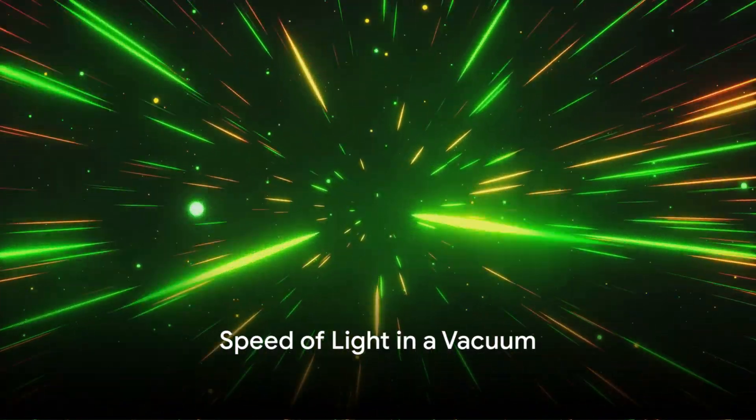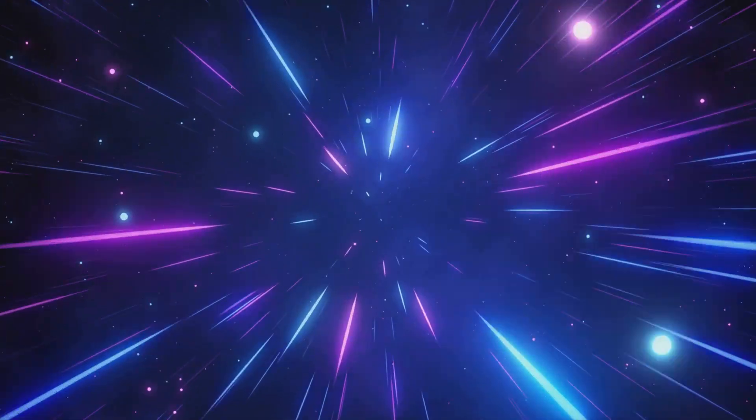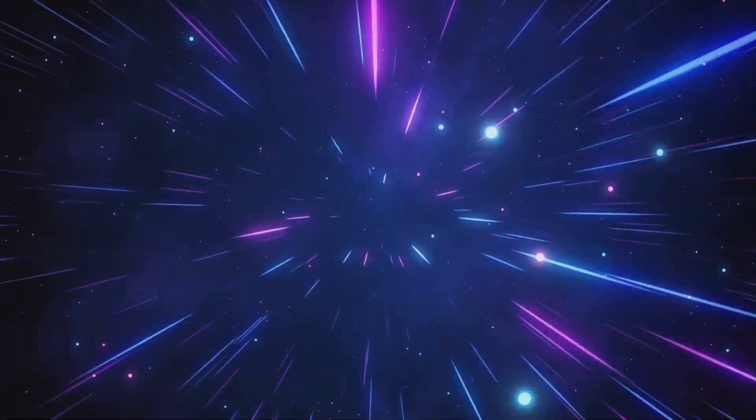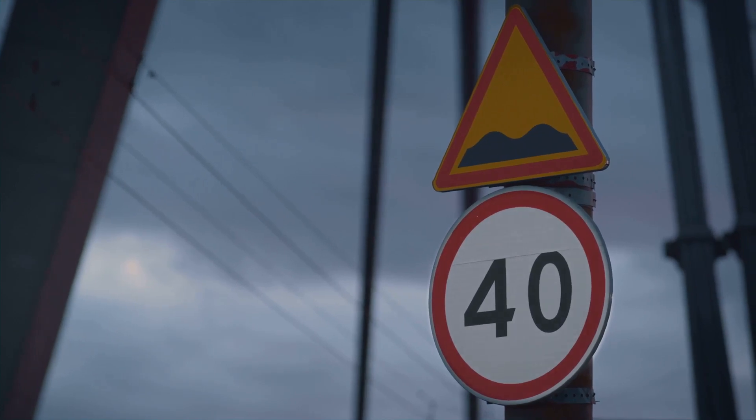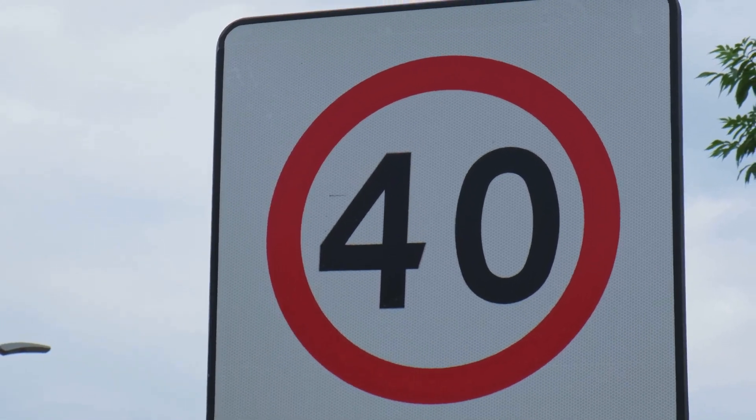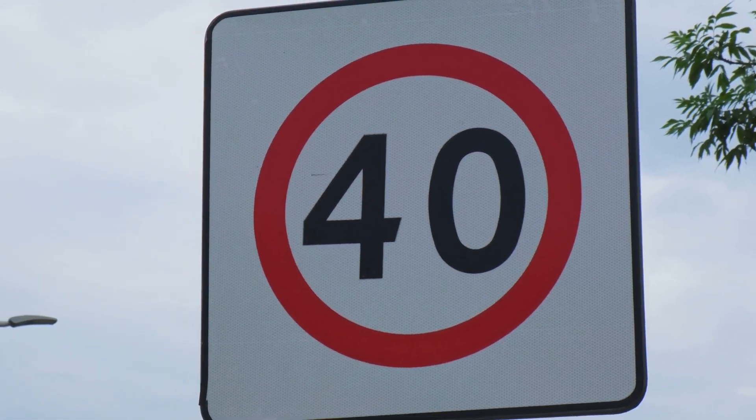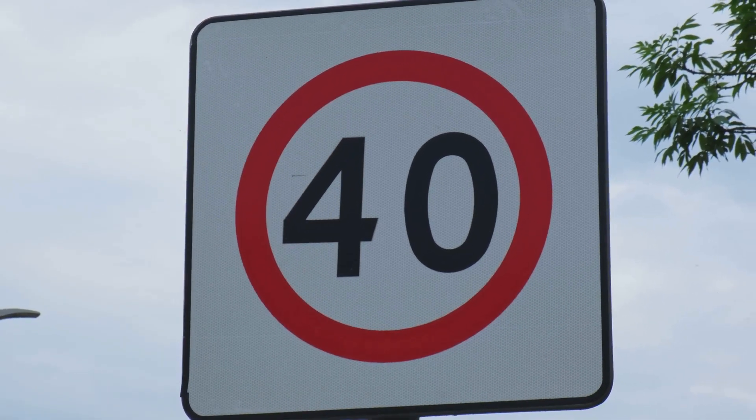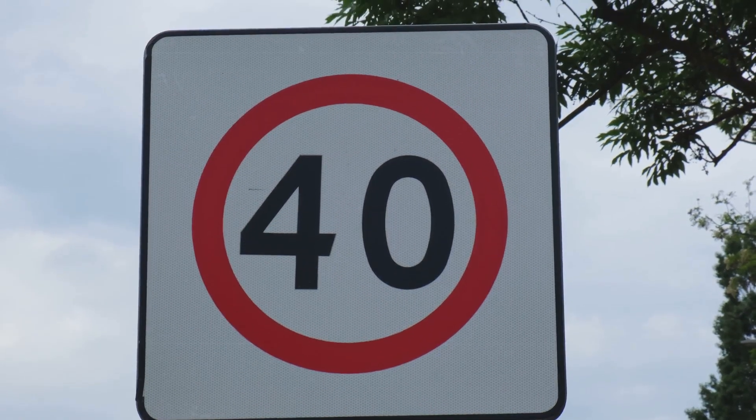Light, when in a vacuum, travels at an astonishing speed. This speed is so staggering that it's difficult to comprehend. Imagine if you could circumnavigate the Earth seven and a half times in just one second. That's the speed of light for you. When light travels through the emptiness of space, free from any medium that could slow it down, it zooms at a constant and mind-boggling speed. It's the cosmic speed limit, the fastest anything can travel in our universe.